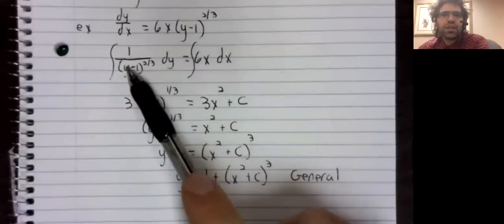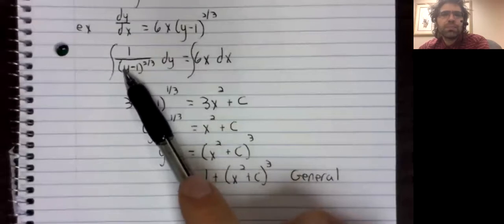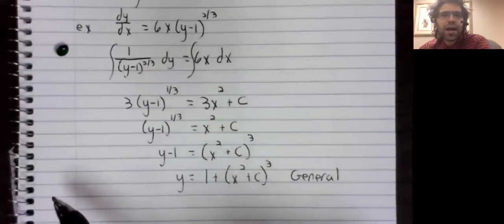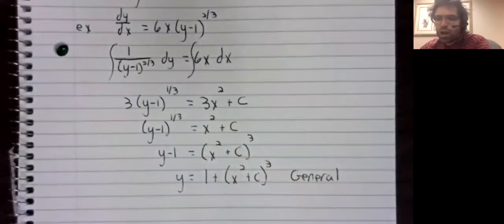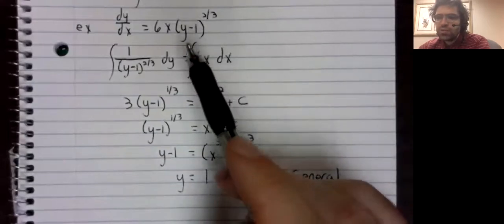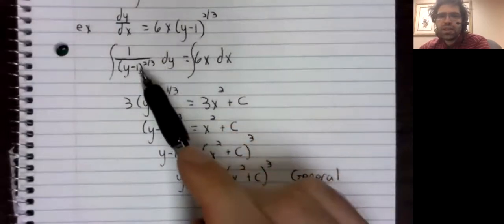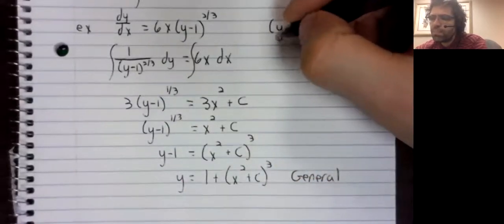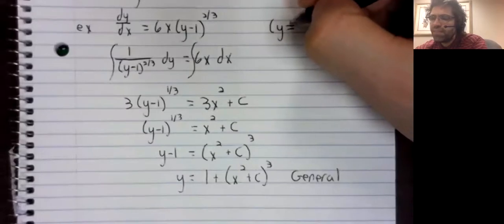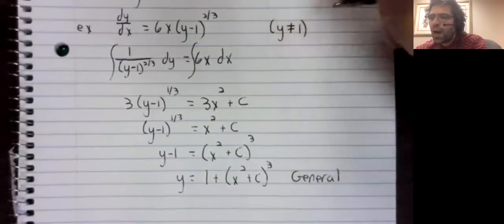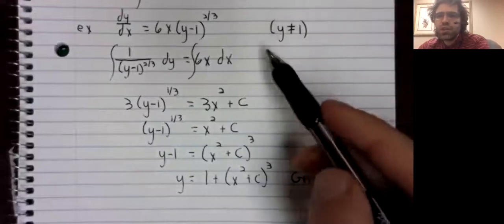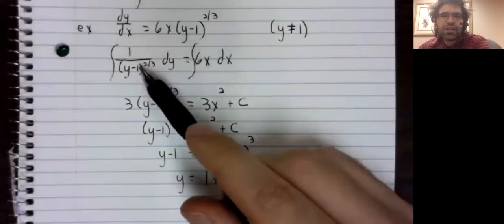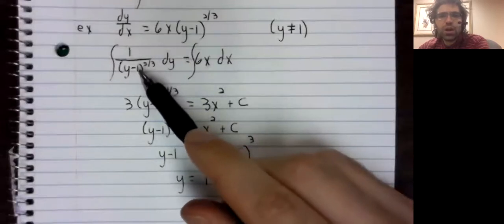We probably didn't think a lot about that step while we were doing it, but we can't divide by zero. So to go from here to here, we need to make an assumption that y is not equal to 1. Otherwise, we'd have a division by zero error.